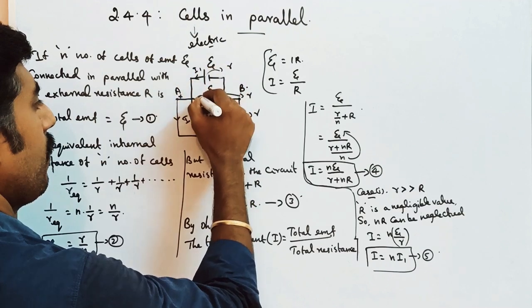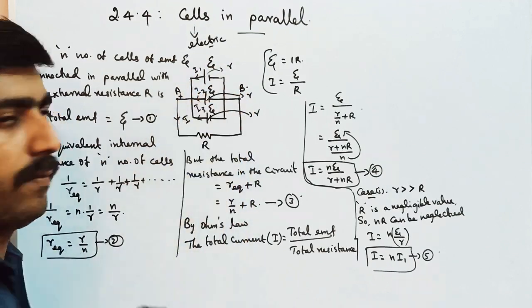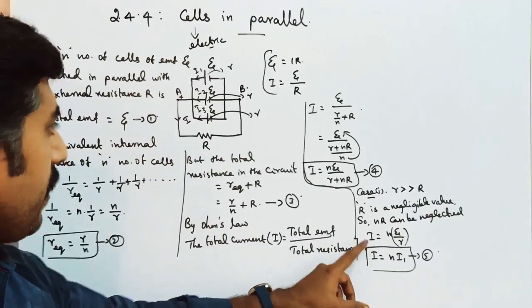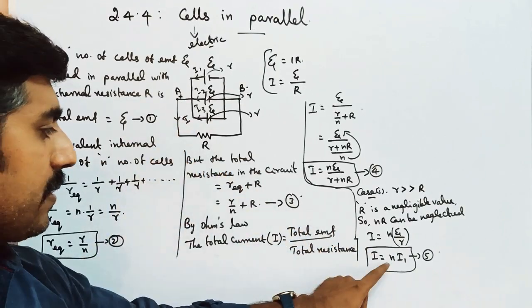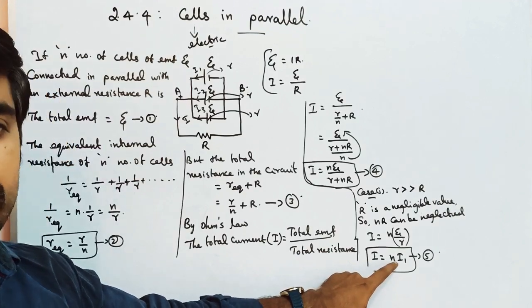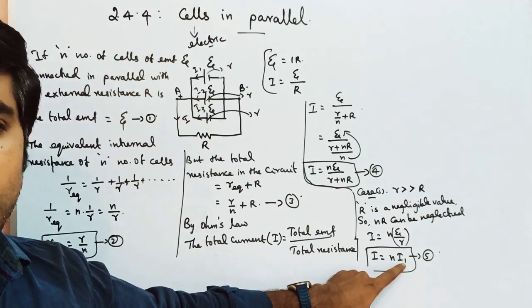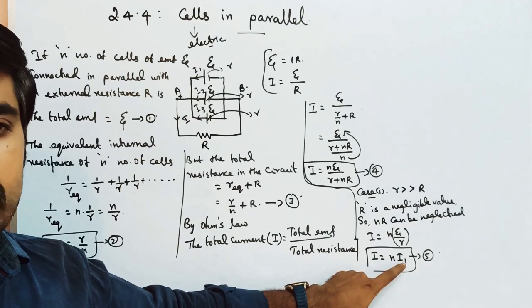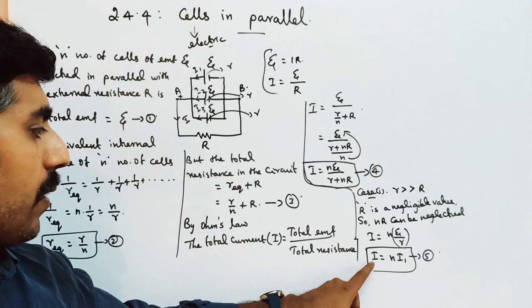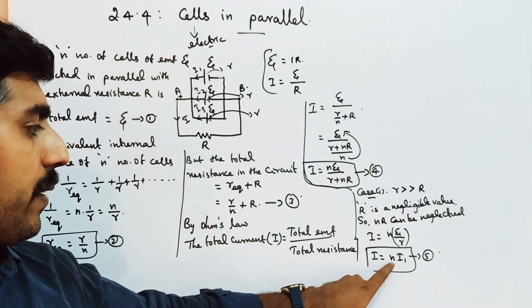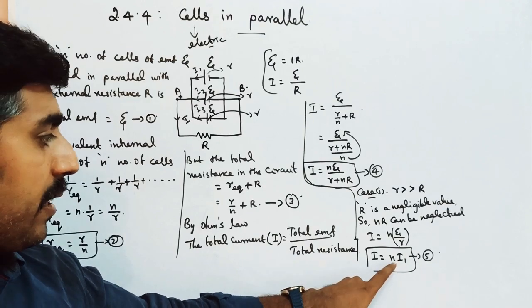So we can write I = N·i₁, where i₁ is the current supplied by each individual cell. This is equation number 5. The total current supplied by the battery equals N times the current supplied by each cell. So for 2 cells it is 2i, for 3 cells it is 3i, and for N cells it is N times i.